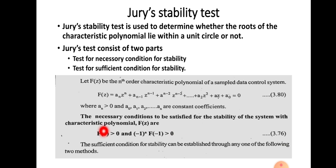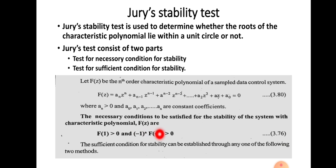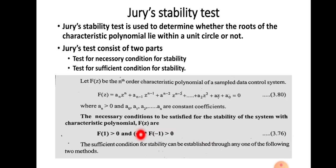These are the necessary conditions. We will be given the characteristic polynomial F(Z). When you put Z = 1, the value F(1) should be greater than 0. The next condition requires putting Z = -1 and checking that (-1)^N · F(-1) > 0, where N is the order of the characteristic polynomial. This quantity should be greater than 0. If these two conditions are satisfied, we can say that the system is necessarily stable.